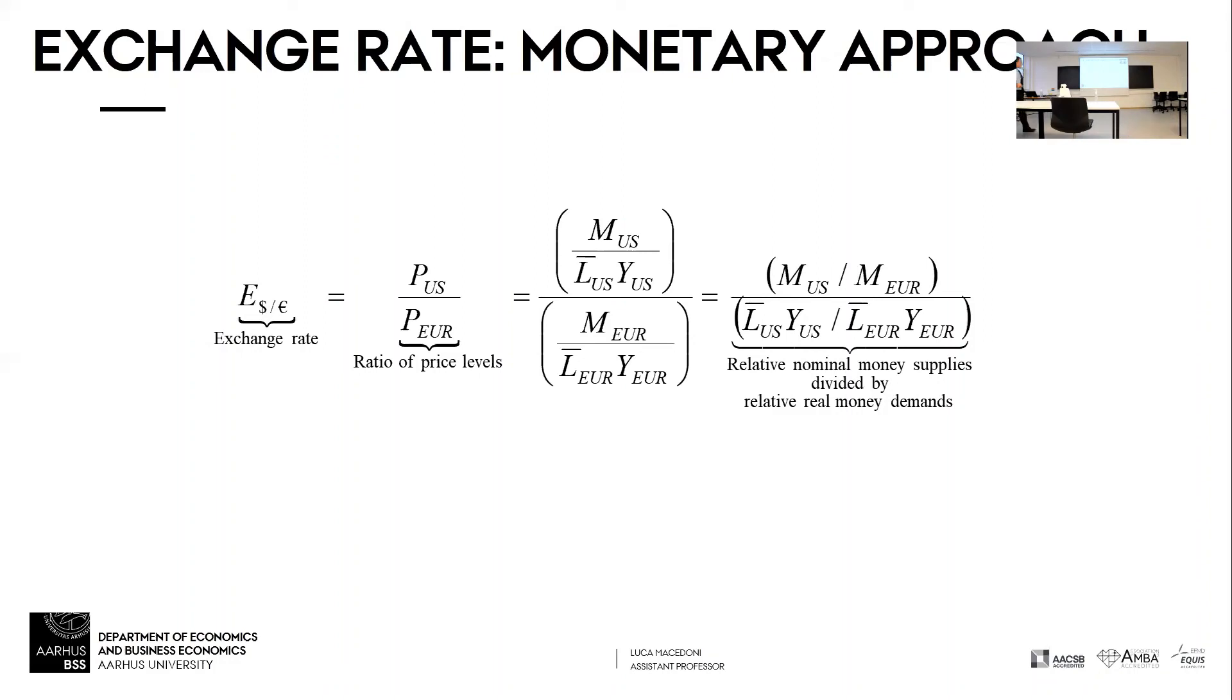It goes down, because the same amount of money is changing hands for more goods, so the price of these goods must go down.